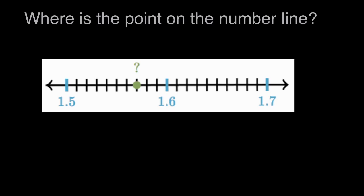Where is the point on the number line? Here we have a number line that starts at 1.5, or 1 and 5 tenths, and goes to 1 and 7 tenths.